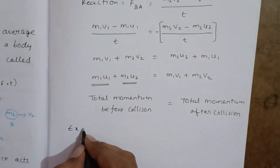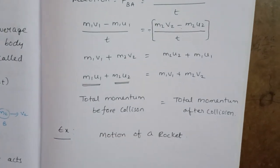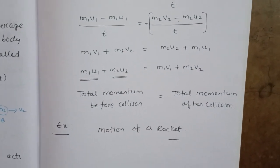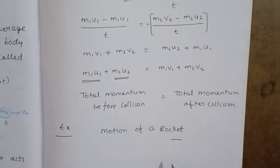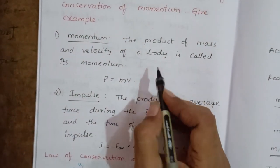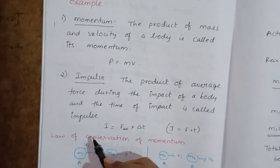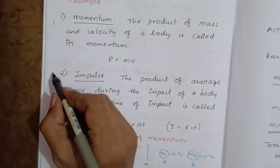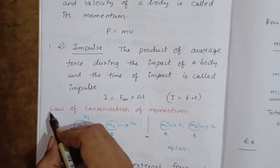An example satisfying the law of conservation of momentum is the motion of a rocket. This question is for 4 marks: writing the definition of momentum is 1 mark, definition of impulse is 1 mark, and the law of conservation of momentum is 2 marks.